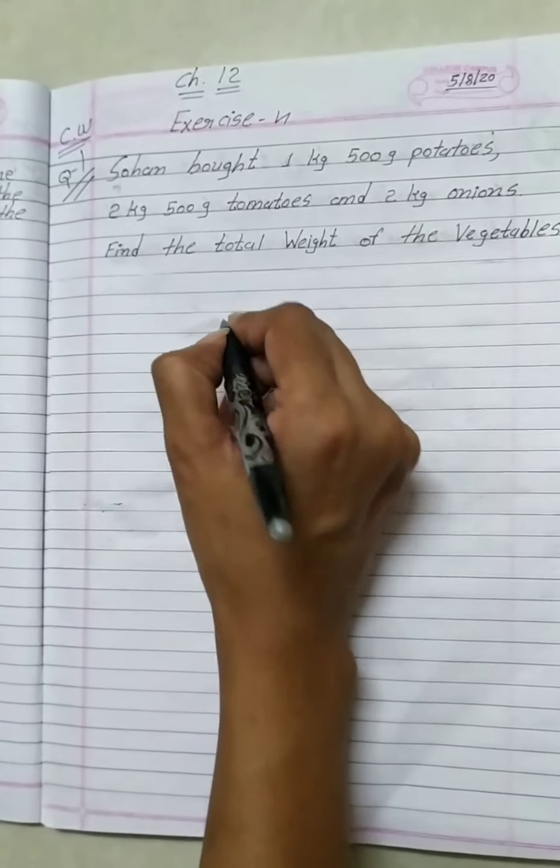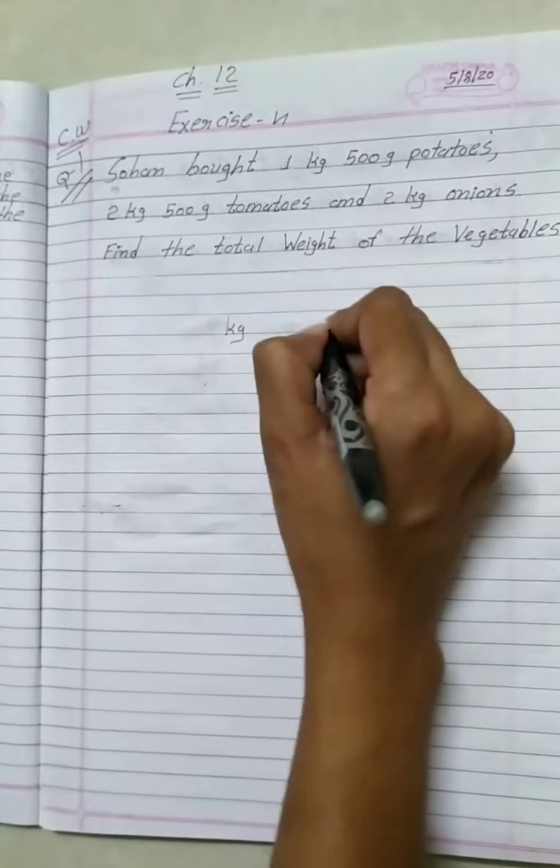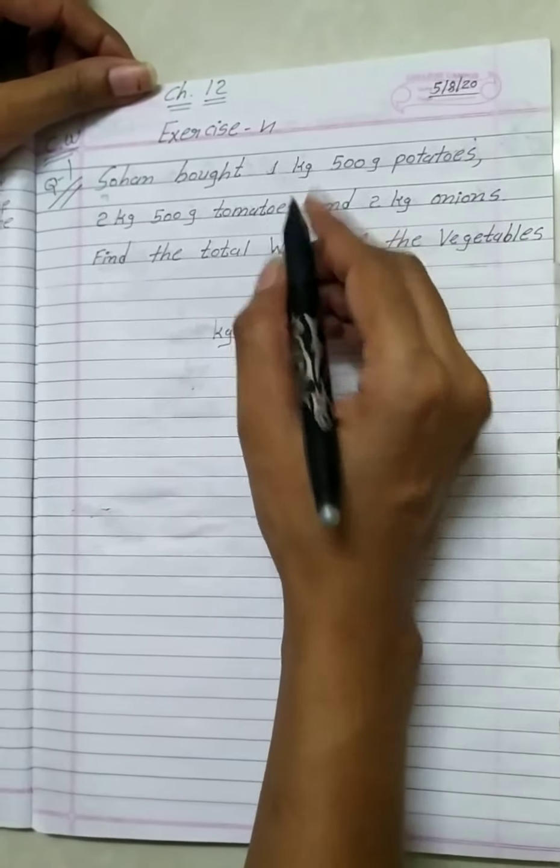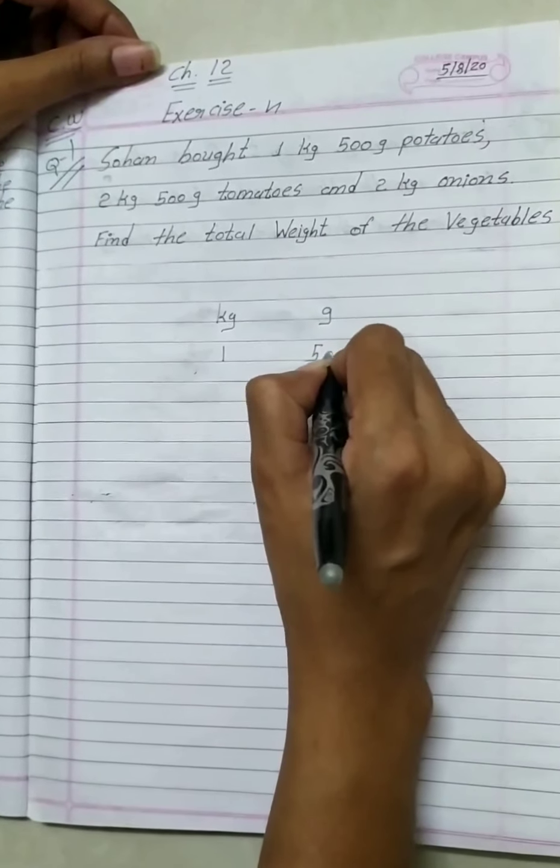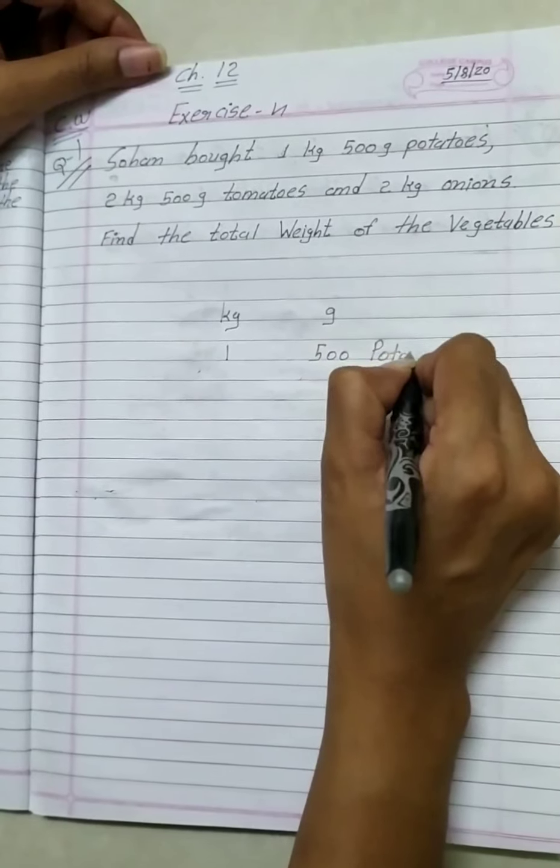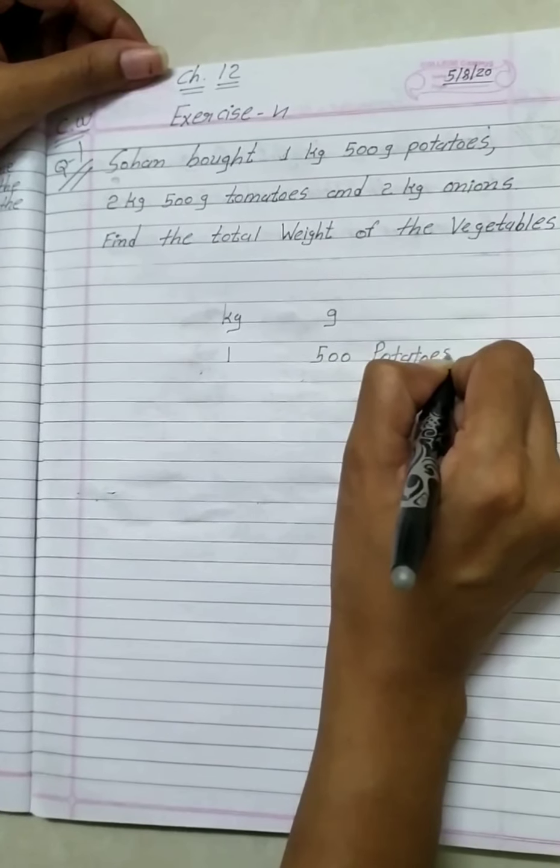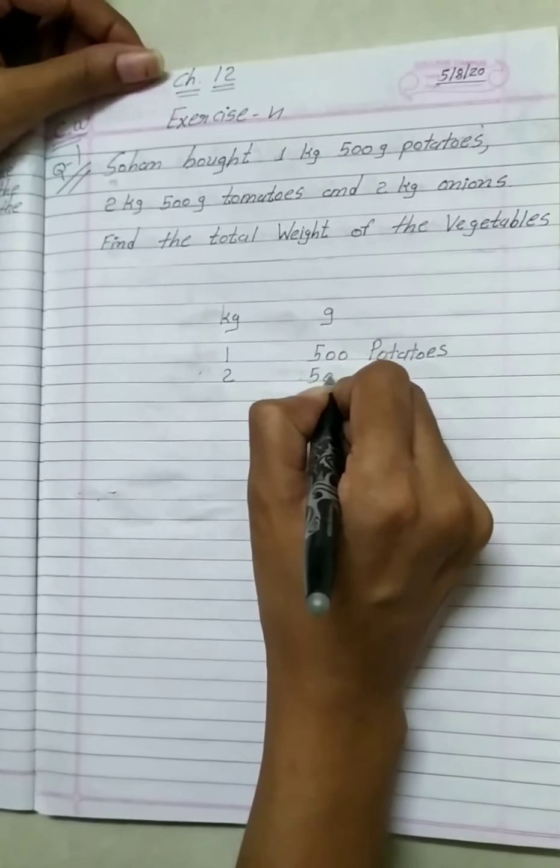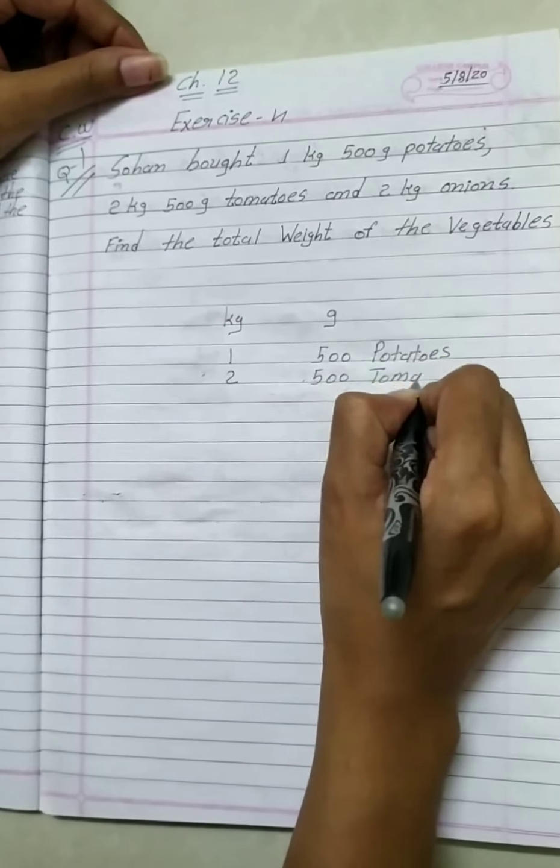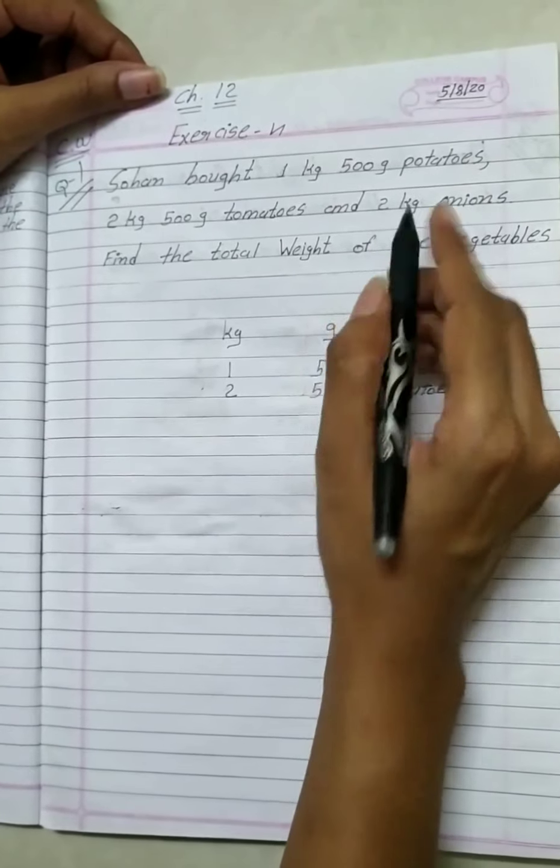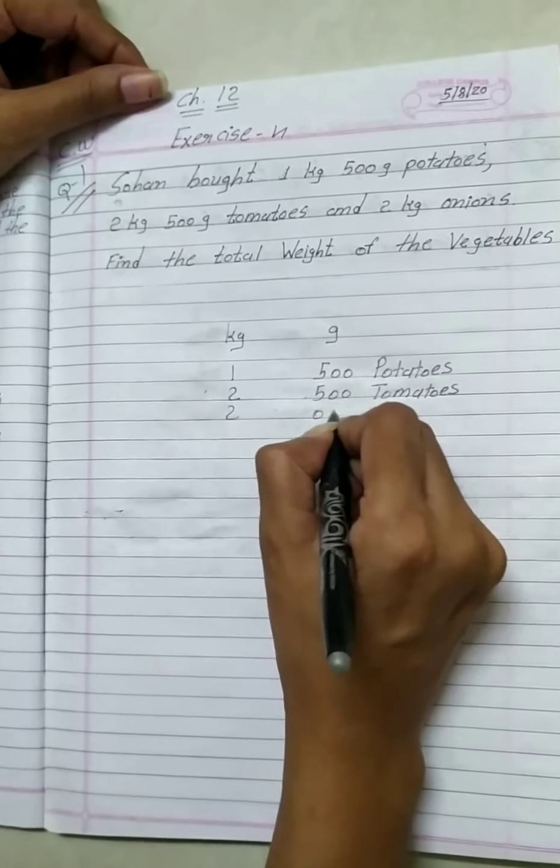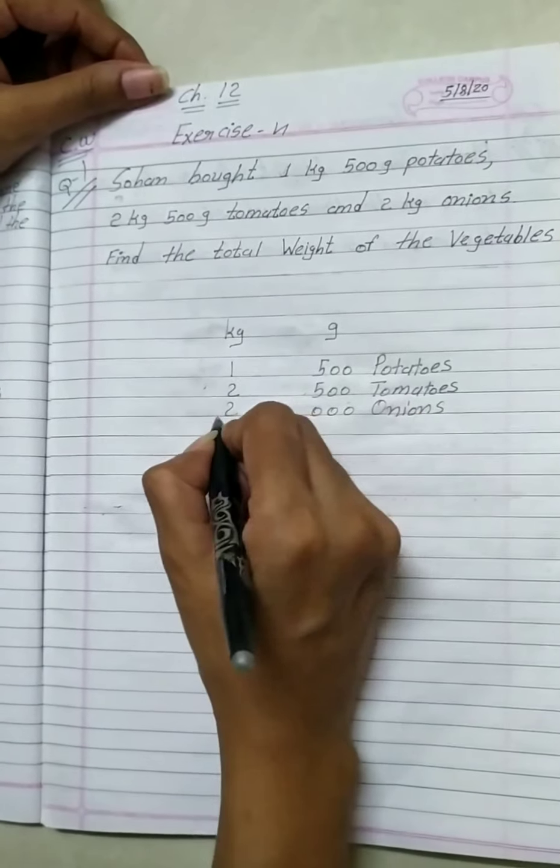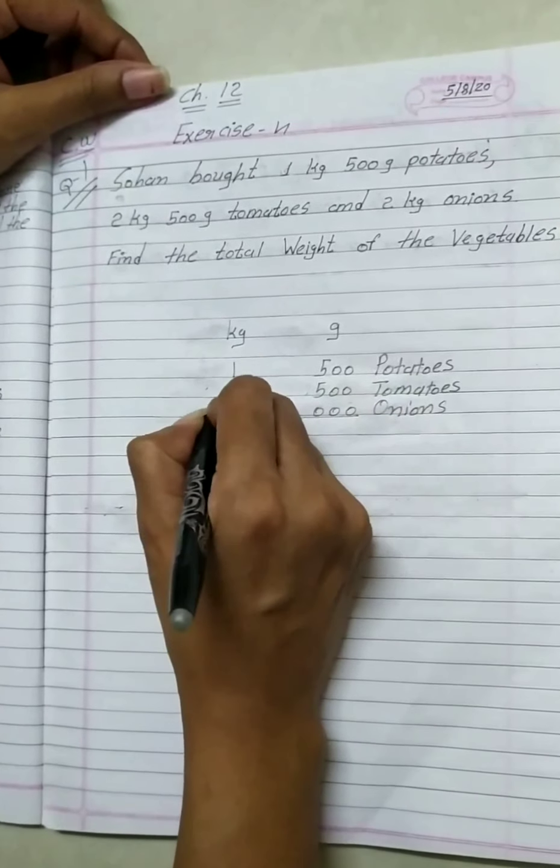First of all we write down the kg and gram. Now first one, 1 kg 500 gram potatoes. Second one, 2 kg 500 gram tomatoes. Third one, 2 kg onion. So we find out the total weight of vegetables.